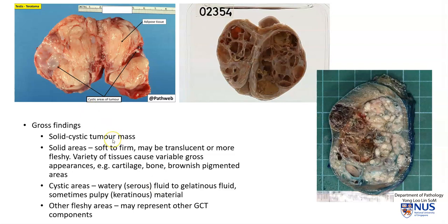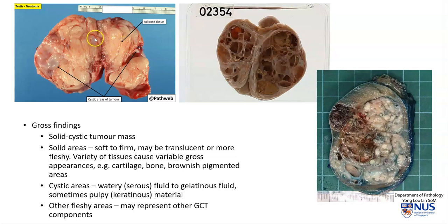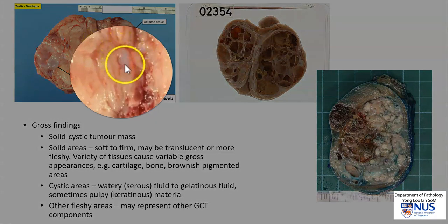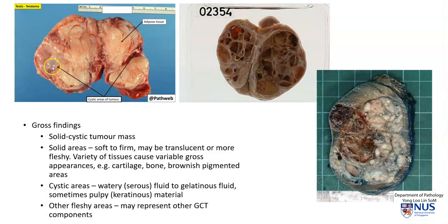Grossly, the appearances can be quite varied. Usually we would see a solid cystic tumor mass. The case I have just demonstrated is predominantly cystic. In this case, you can see that it is mixed solid and cystic, and the solid areas can vary quite a bit — they can be soft or firm, translucent or fleshy, and you can sometimes recognize gross tissue types. For example, this yellowish tissue is adipose tissue, and this almost whitish or grayish translucent area here is likely to represent cartilage. And here we have some cystic areas.